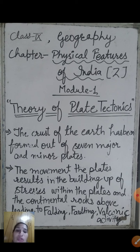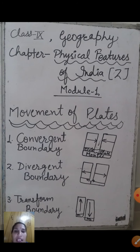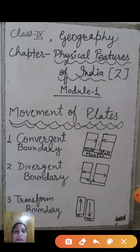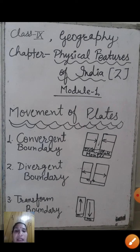There are three kinds of plate movement: convergent movement, divergent movement, and transform movement. As you can see in the given picture, on the basis of these movements, the plates form three types of plate boundaries — one for each kind of movement.